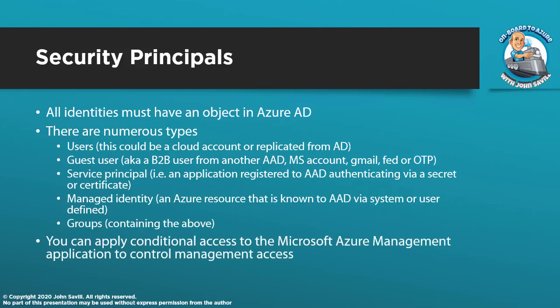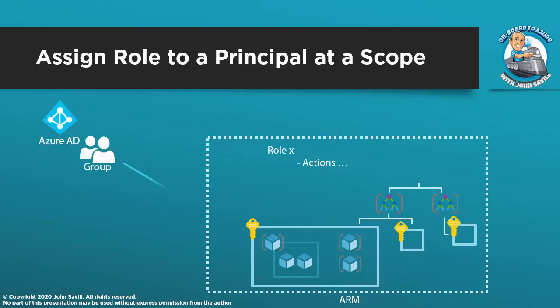If I want, I can use conditional access to the Microsoft Azure Management application to control that access. The portal, PowerShell, CLI, and APIs all fall under that Microsoft Azure Management application. So if I wanted to say, before you can use the portal you must be on a managed device, be healthy, be at a certain location, and have completed MFA, I could use conditional access to drive that requirement. Essentially, all of the things we talked about result in: a certain principal is assigned at a certain scope a certain role.